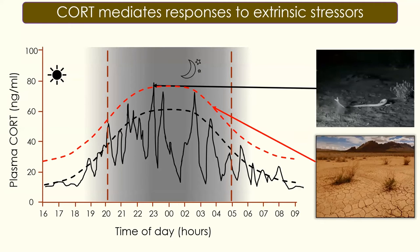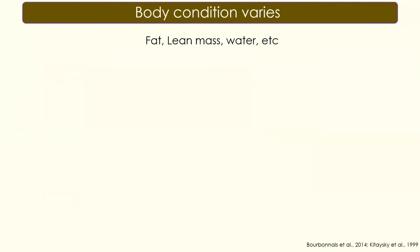Body condition can vary and can be measured in multiple ways, such as allometric scaling. For my thesis, I focused specifically on fat, lean mass, and water — all important resources for the animal to thermoregulate. Body condition can vary depending on multiple factors such as phenology, life history traits, and stress.